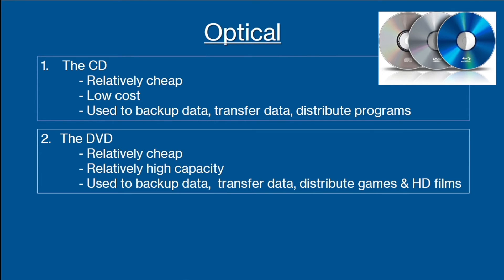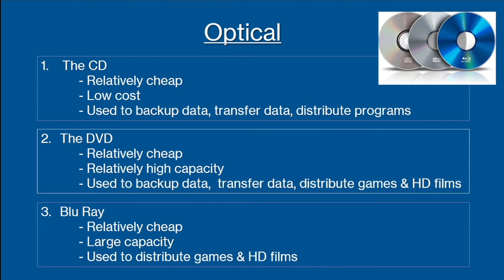Next, we have the DVD, which often stores movies. It is relatively cheap but has a relatively high capacity, so it's used to backup data, transfer data, as well as distribute games and high-definition films. Lastly, there's Blu-ray. Like the other optical disks, this is relatively cheap but has the largest capacity, so it's used to distribute games and high-definition films.